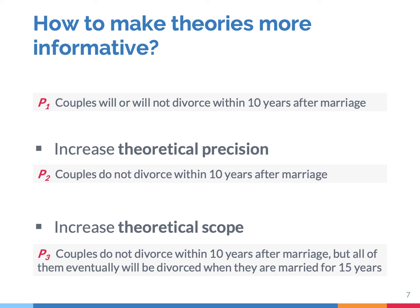P1 does not exclude anything — it cannot be falsified. But P2 can be wrong, which is good. Proposition 3 increases the theoretical scope; it makes the theory applicable to a wider range of phenomena. Whereas P2 remains silent about what happens to couples after they have been married for 10 years, P3 very explicitly states that after 15 years of marriage, everyone will get a divorce. Hence, theoretical scope refers to the degree to which the theory is applicable to a wider range of cases, phenomena, population, and settings. P3 has a broader scope than P2.